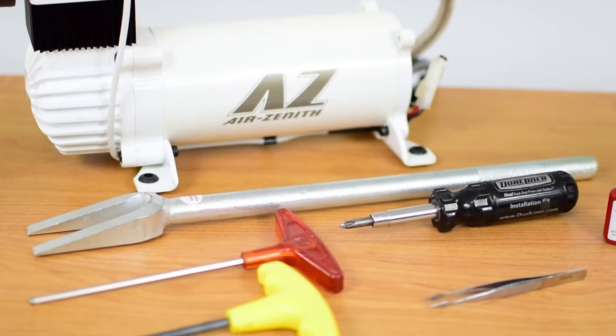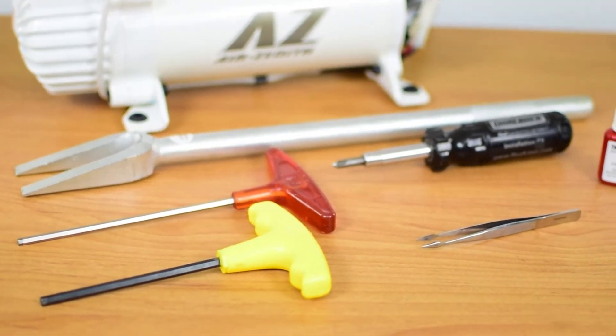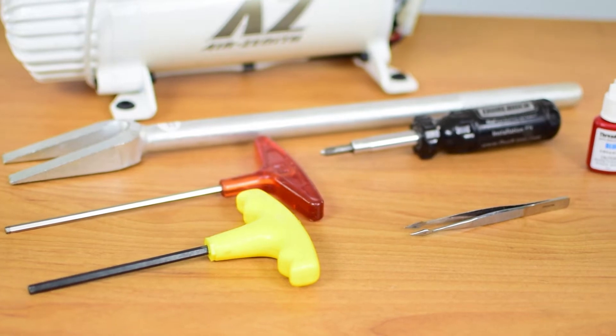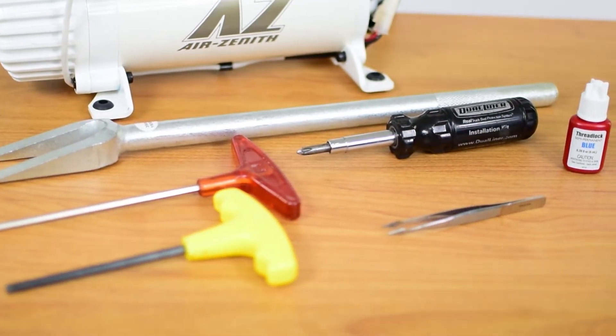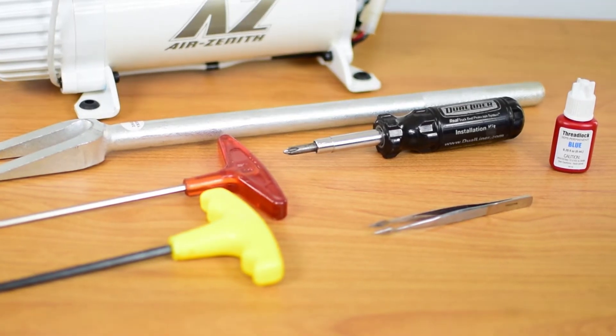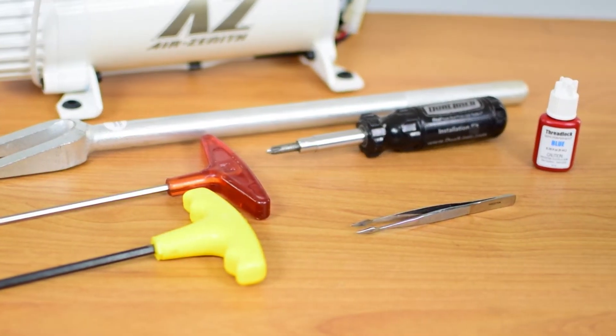The tools you will need today are a five millimeter and four millimeter allen wrench. You will need a ball joint separator fork, also known as a pickle fork, a P2 sized Phillips screwdriver, a pair of tweezers or a small piece of metal to help remove the o-rings, and some blue Loctite to put everything back together.